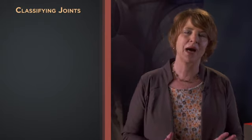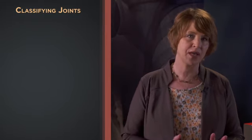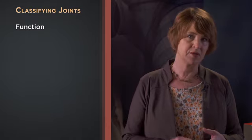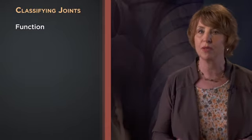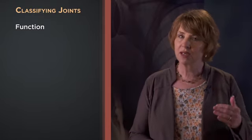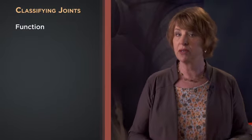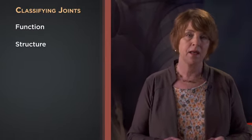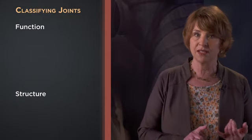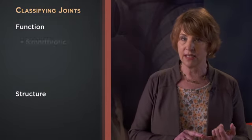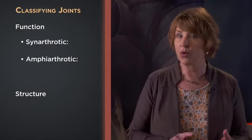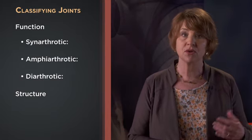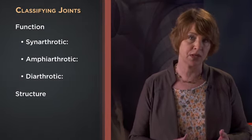Any joint in the body can be classified in two ways. One way is based on the joint's function — specifically how much it moves. The second approach classifies joints by their structure in terms of their connective tissue linkages. Functionally, joints are classified as synarthrotic, amphiarthrotic, or diarthrotic joints by their degree of movement, since 'arth' is the medical term for joint.